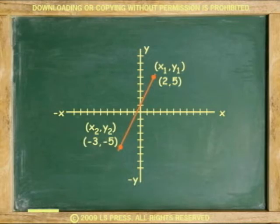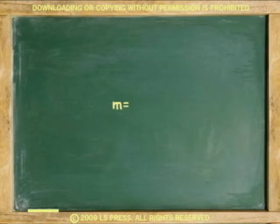The equation to find the slope m is m equals y for the second point minus y for the first point, over x for the second point minus x for the first point.